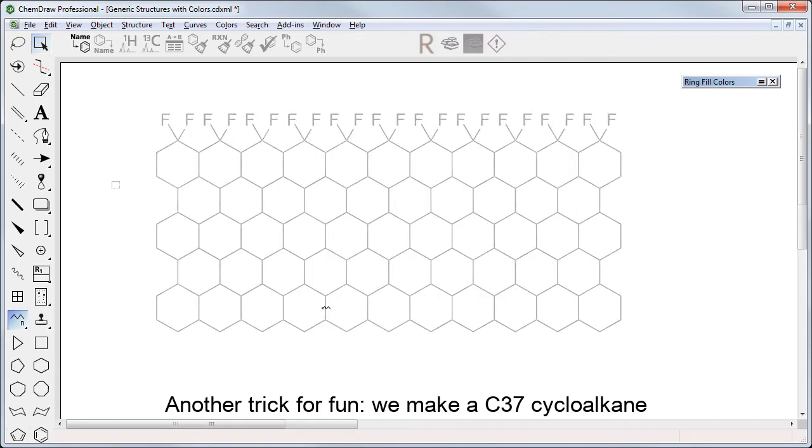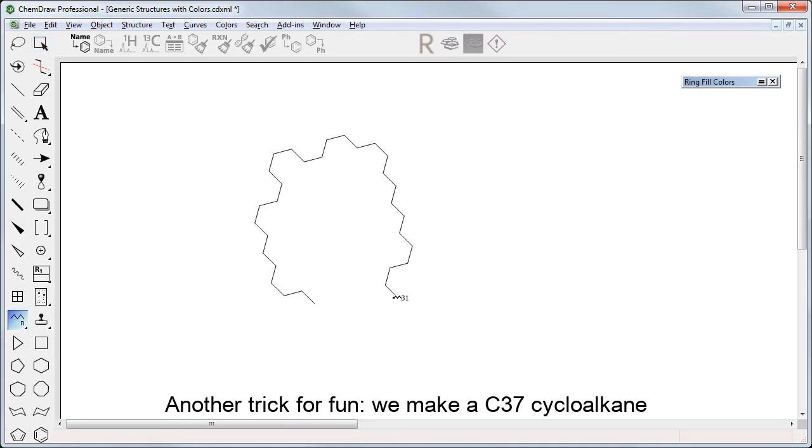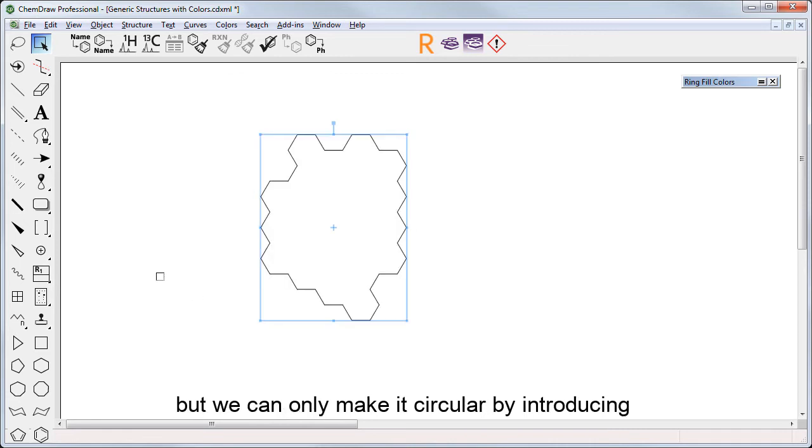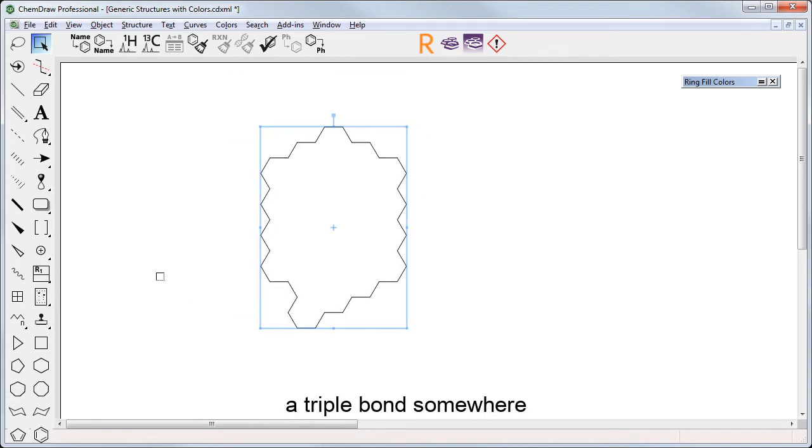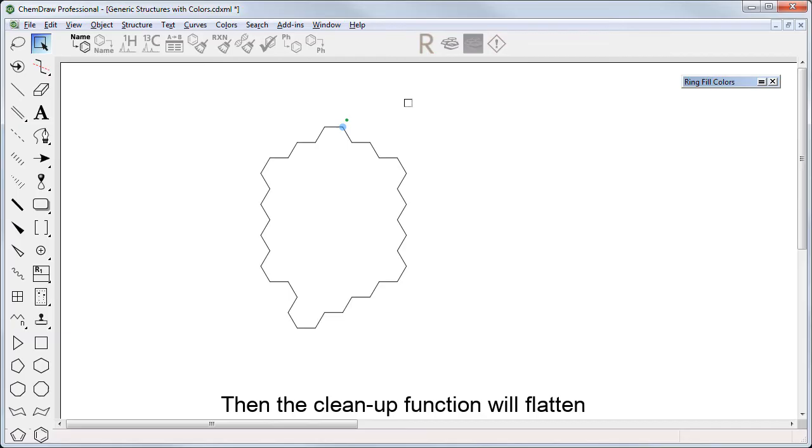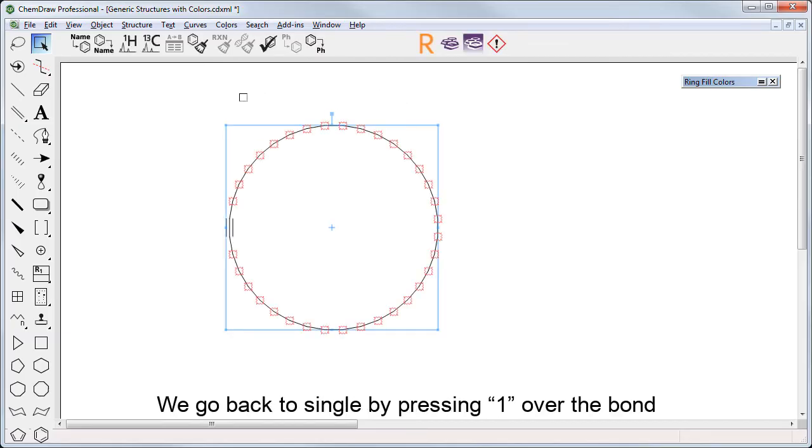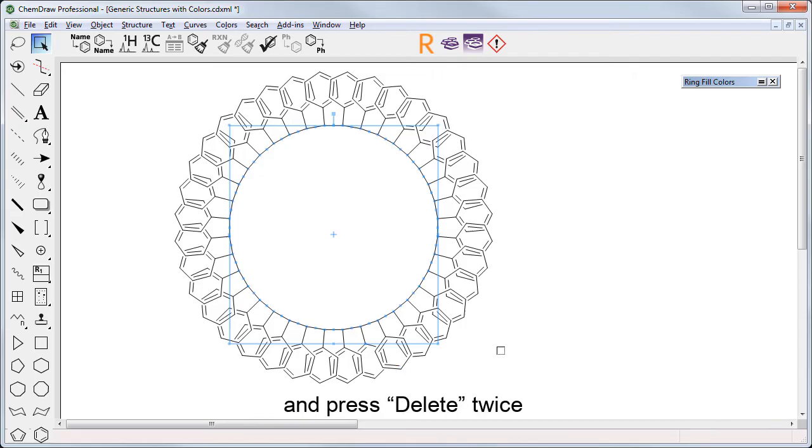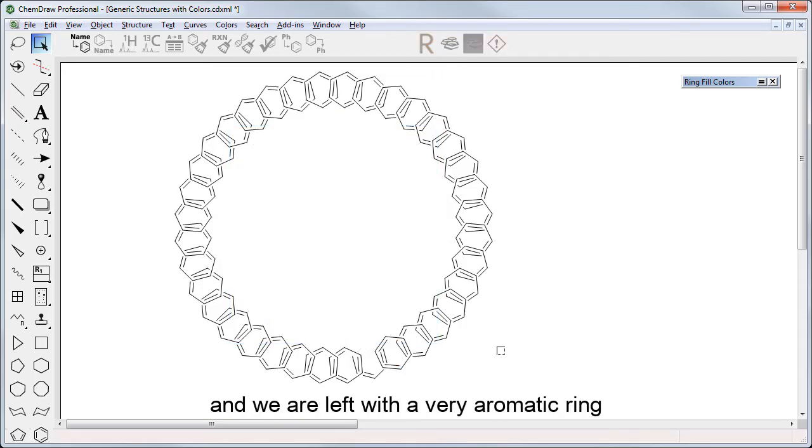Here's another trick for fun. We draw a C37 cycloalkane and we make it round by cleaning it up, but we can only make it circular by introducing a triple bond somewhere. Then the cleanup function will flatten the geometry around the triple bond, and we go back to a single bond by pressing 1 over the bond. Select everything and press 3 or A to sprout phenyl groups and press delete twice, and we are left with a very aromatic ring, which in version 19 you can select and fill with the color of your choice.